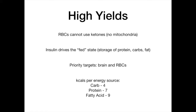The last high-yield point: know how many kilocalories are in each macronutrient. One gram of carbohydrate has 4 kcal, one gram of protein has 7 kcal, and one gram of fatty acid has 9 kcal. The mnemonic is the number of letters in each word: 'carb' has 4 letters, 'protein' has 7 letters, and 'fatty acid' has 9 letters total. Also remember that RBCs — previously called 'really basic cells' — have no mitochondria and can't use ketones. And insulin insulates the body with fuel, leading to storage of protein, carbs, and fat.